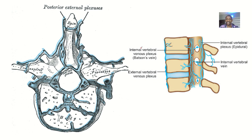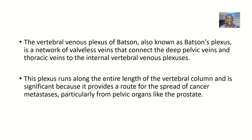You can see this is the venous plexus — this is the top view, and this is the side view. You can see the internal vertebral venous plexus of Batson, with a whole interconnection of veins along the spinal cord. The vertebral venous plexus of Batson, also known as Batson's plexus, is a network of valveless veins — you must include that word: valveless.